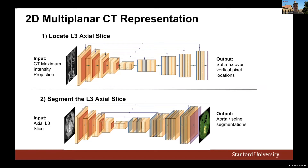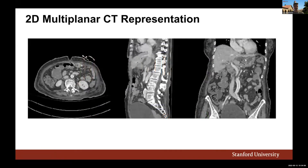After locating the L3 axial slice, we segment it to find the aorta and spine, which provides the sagittal and coronal slices. The final model input is a concatenation of the L3 axial slice on the left, a sagittal slice in the center, and a coronal slice on the right.